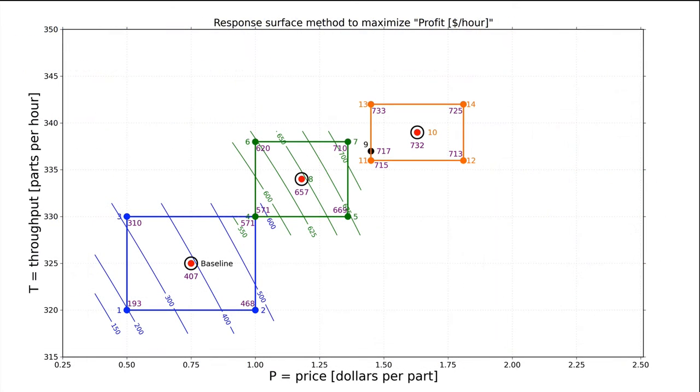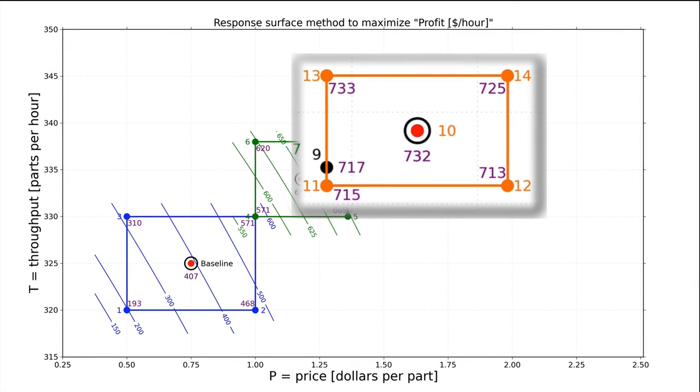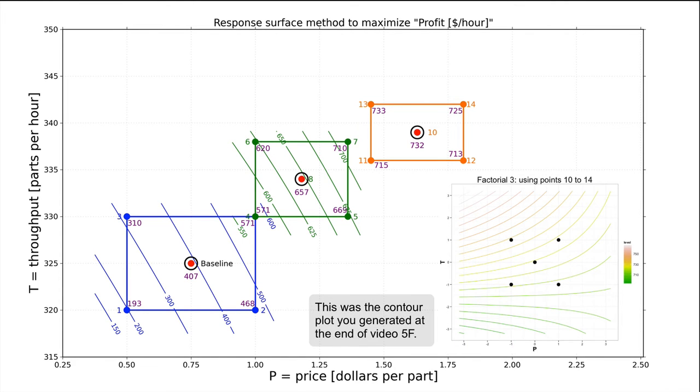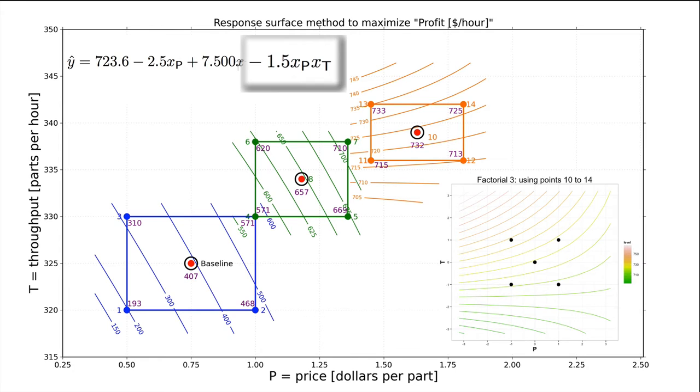So let's resume from an earlier video and continue with the model built on points 11, 12, 13, 14, and the baseline value at point number 10. We pointed out that the contour plot exhibits curvature. The lines are not parallel. These curved lines come from the interaction term, indicating that the interaction coefficient is important relative to the main effects.